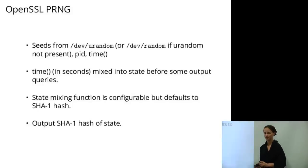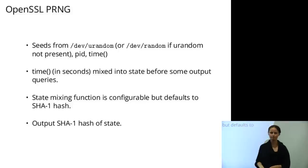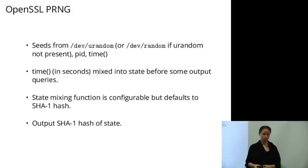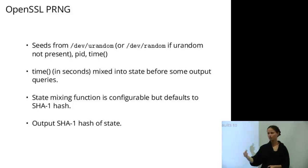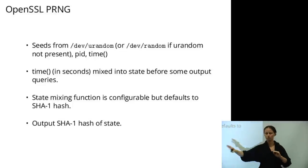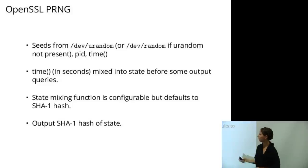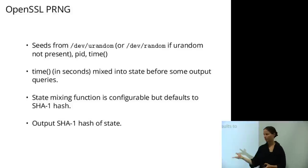Moving up the stack: what about libraries? The most famous cryptographic library is OpenSSL. OpenSSL has its own internal pseudorandom number generator. It seeds from /dev/urandom or /dev/random plus other system calls like process ID and current time. It seeds once to initialize, and in order to update the state going forward, the only new things mixed in are the process ID and the time. So seed once from the operating system — you'd better have gotten good entropy then — because after that it's only the time. The mixing function is configurable but defaults to SHA-1; they pull apart SHA-1 to use its internal update functions. The output is also the SHA-1 hash.